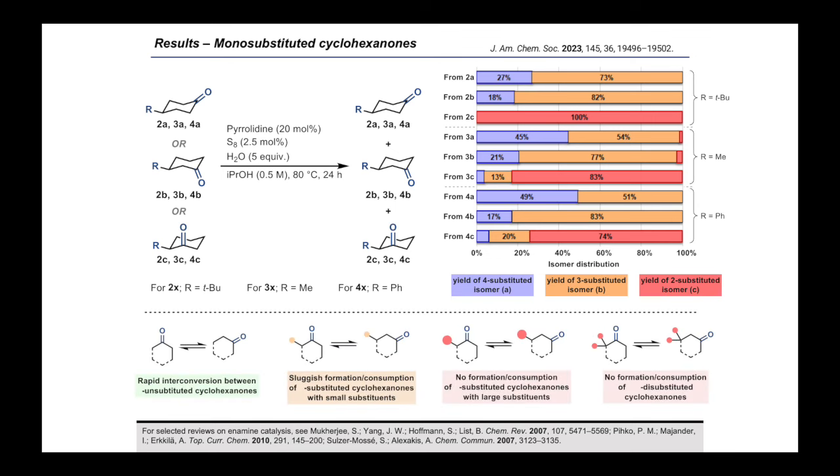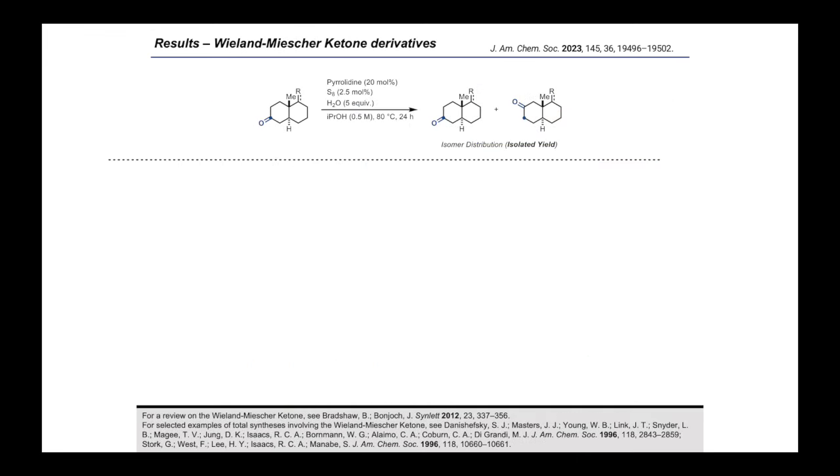Collectively, these results show us that alpha-unsubstituted cyclohexanones rapidly isomerize under our reaction conditions. Moreover, isomerization of alpha-substituted cyclohexanones is shown to be sluggish if the substituent is small or does not occur at all if the substituent is large or if the ketone is alpha-disubstituted. With this understanding of our reaction's kinetic selectivity profile, we thought to apply this methodology to more complex targets as we anticipated our mild reaction conditions to be compatible with a range of substrates.